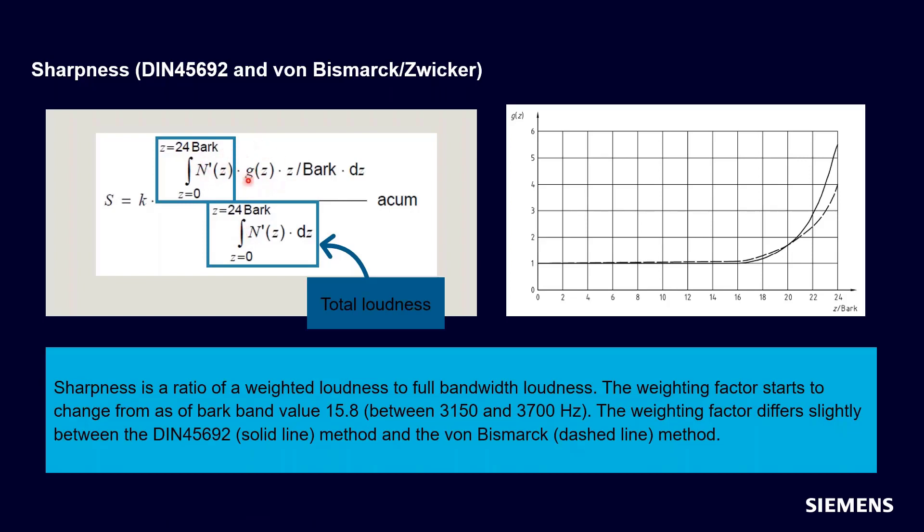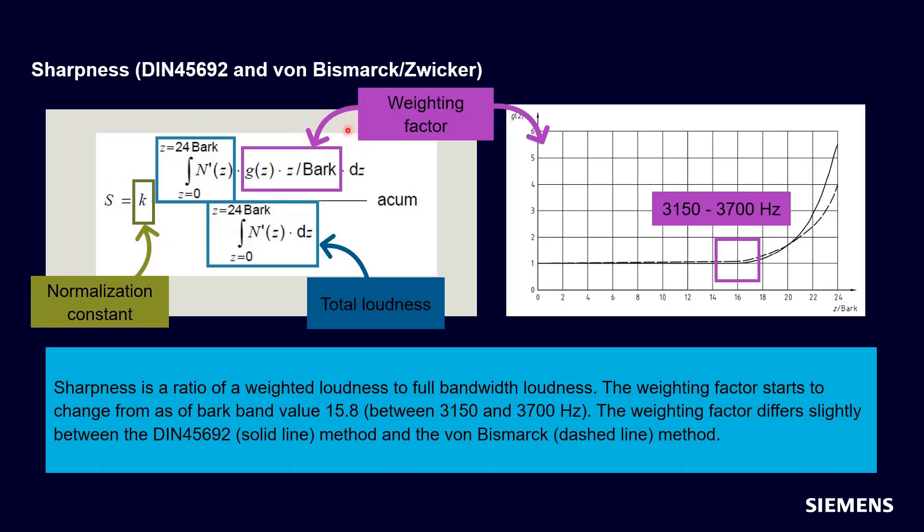The numerator, we're also multiplying by this penalty function, if you will, or sharpness function. There's also a normalization constant. But this weighting factor, which is given here, and so you see the difference between DIN 45692 and the Zwicker is really just how quickly does this weighting factor increase as a function of increased frequency up here near the 22, 23, 24 bark band. So starting around 3,100 hertz or so, we start penalizing frequency content in terms of sharpness. It's not really penalizing, but we get an increased impact the more content that there is out here. So you take the total loudness weighted to the higher end of the frequency, and then you sort of normalize the whole thing by the total loudness, and you get the sharpness value.